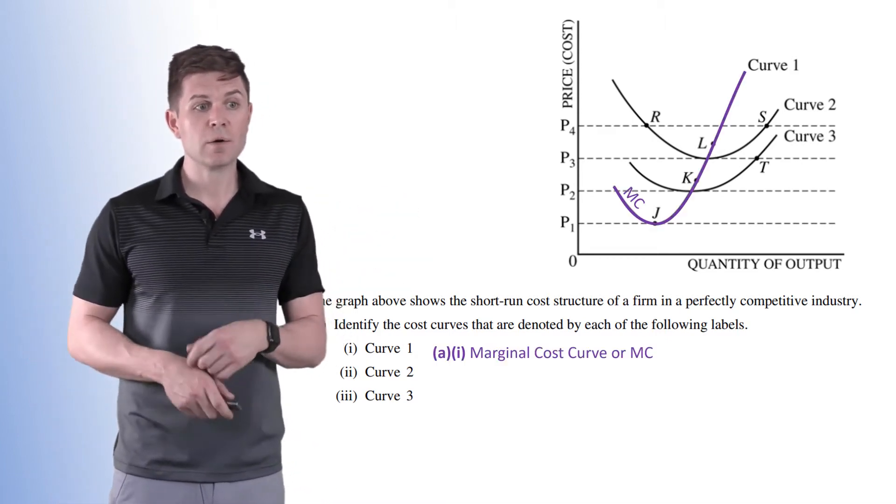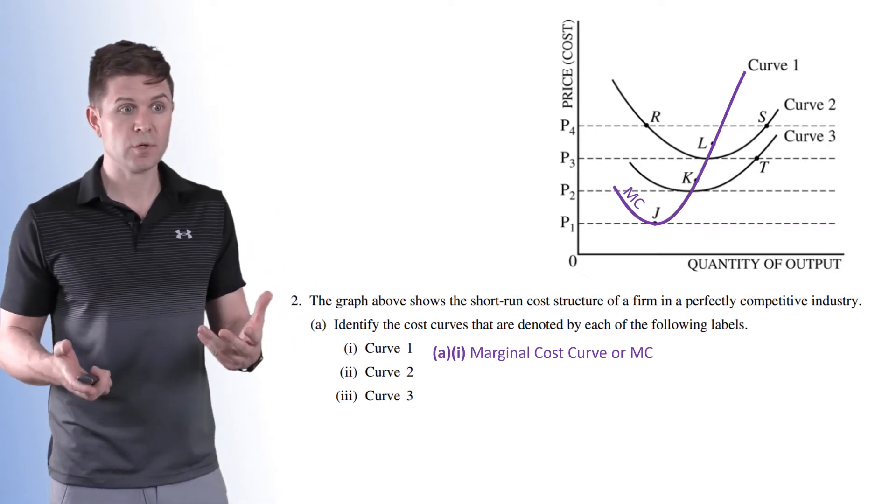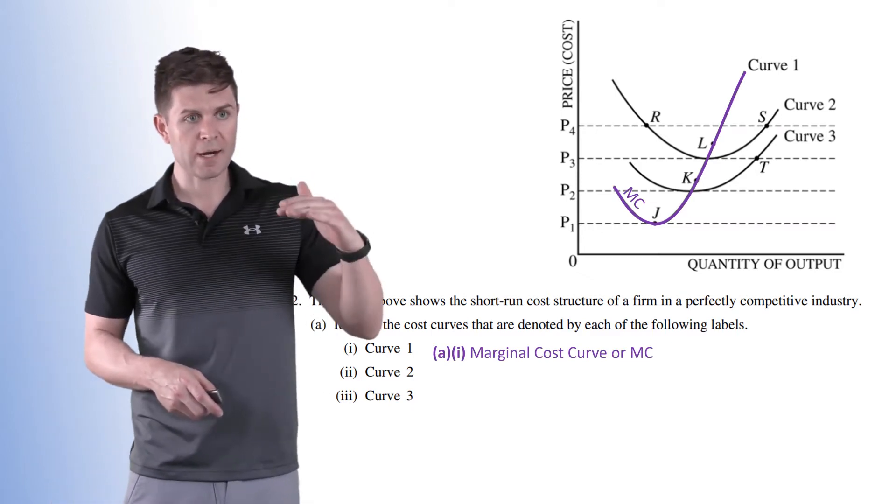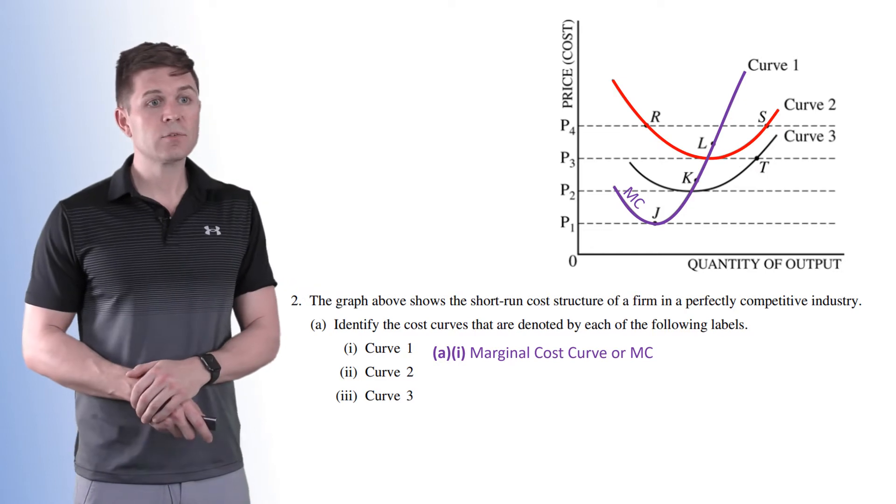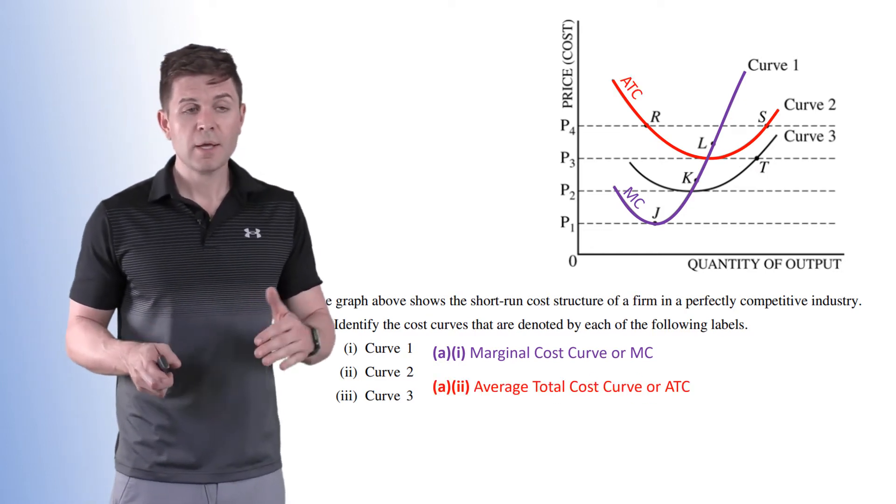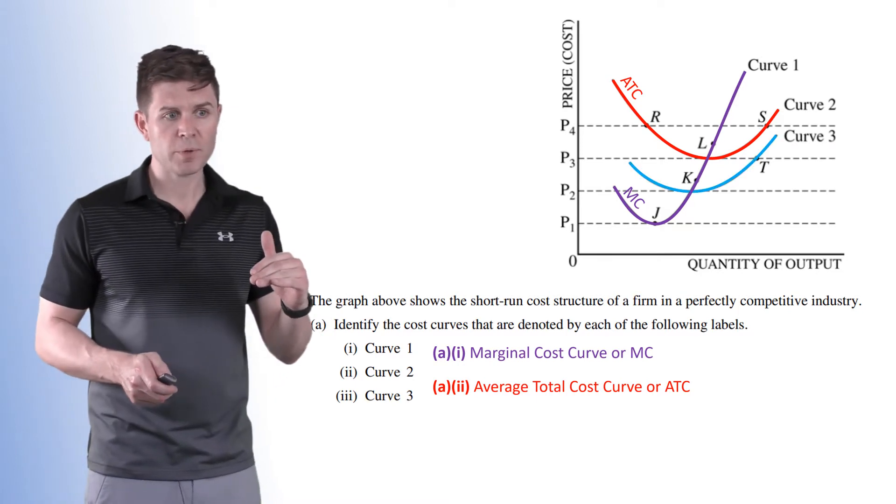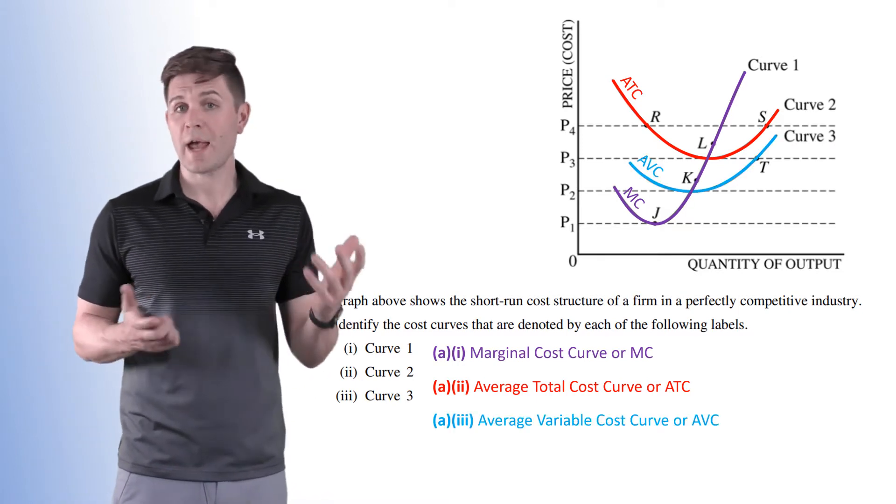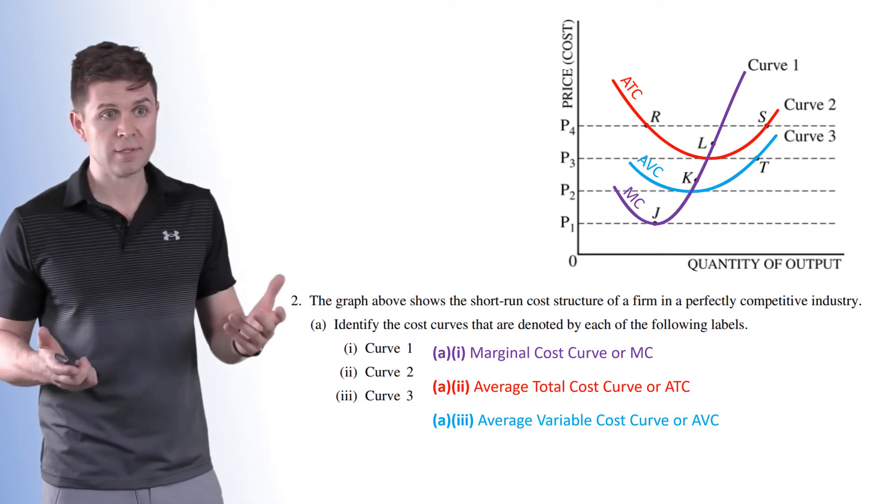This is going to be our marginal cost curve, or the MC curve. Curve two, the higher of the two, is going to be our average total cost curve. Now the one directly below it is our curve three, and this is going to be our average variable cost, or our AVC.